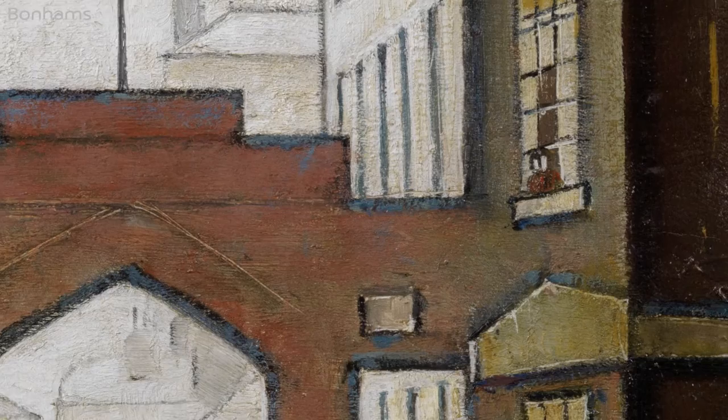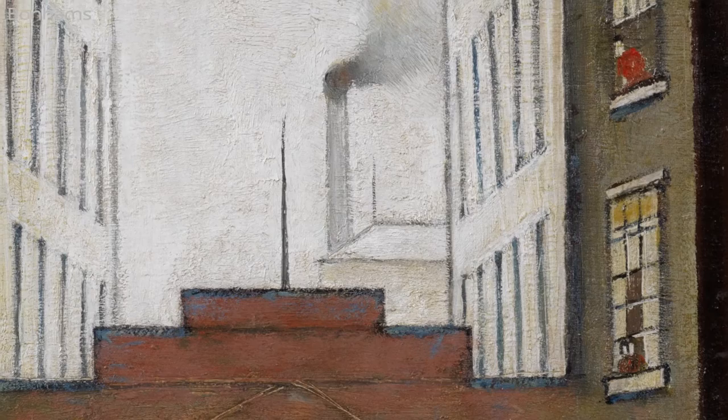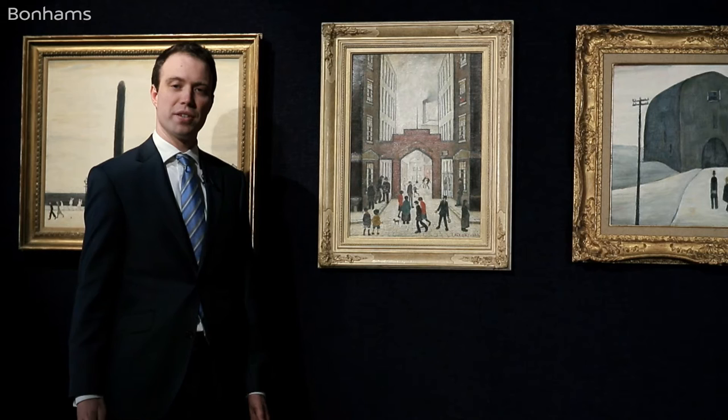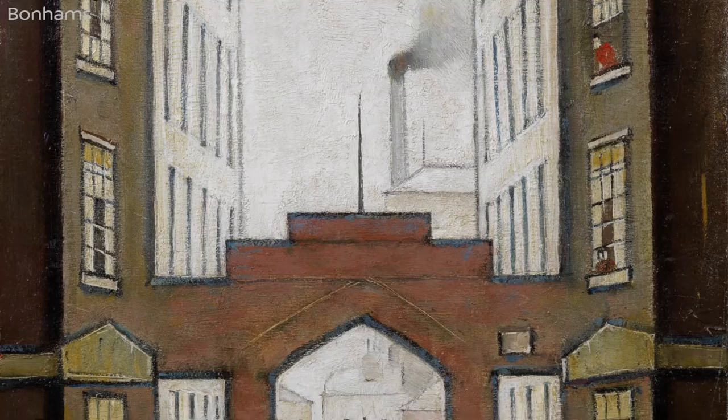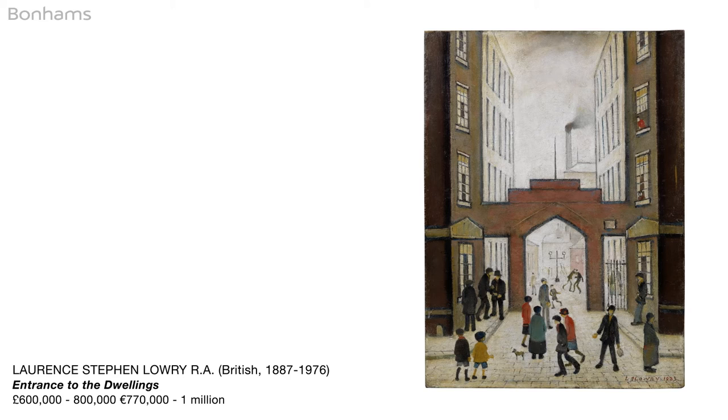The entrance itself is not an exact representation but rather an adaptation of how the dwellings would have been, and this changes over the four decades that the artist illustrated them in his work. The dwellings are the Improved Industrial Dwellings in Salford, otherwise known as the Greengate Industrial Dwellings, which had been created in 1870 to provide accommodation for traders such as stonemasons, bricklayers, and bookbinders.